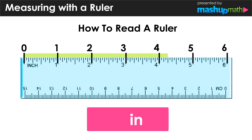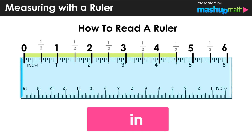But what would happen if we're measuring a distance that falls somewhere in between two of these values? Notice that there is a marking directly in between each one-inch marker on the ruler, and each of those markings represents one half.